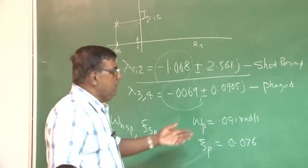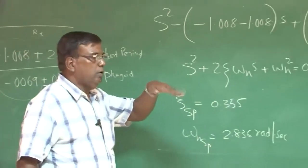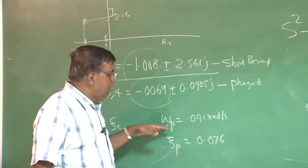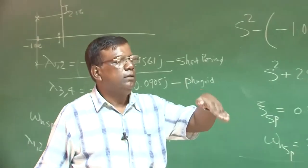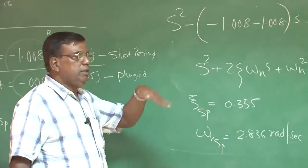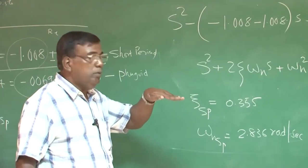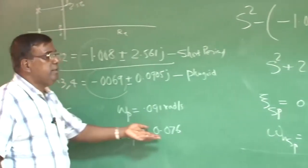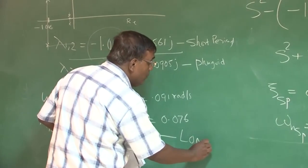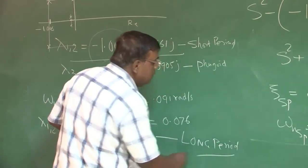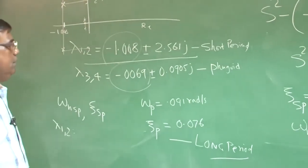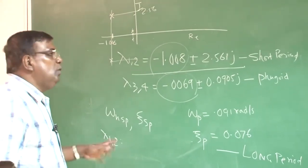So you could see physically also short period is this. So larger omega_n short period 2.836 and fugoid is having motion like this. So omega_n is very, very small. The damping for short period is very short period comes back to equilibrium. So it is 0.355. Fugoid it takes time long period, so it is also called fugoid or long period. So it takes time to come back to the initial equilibrium or steady state.